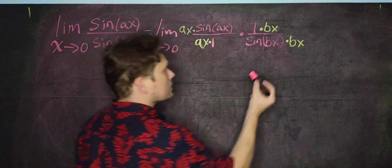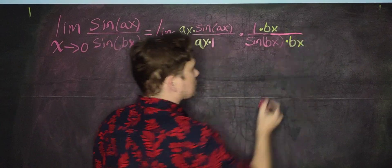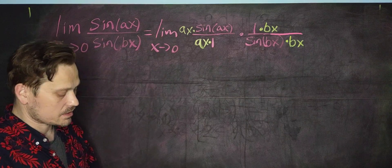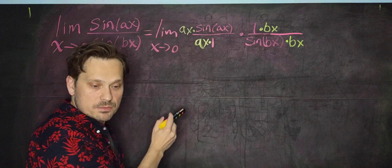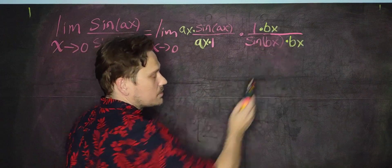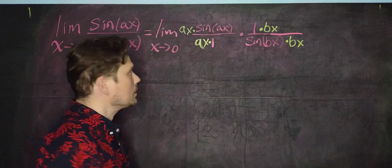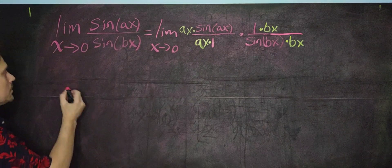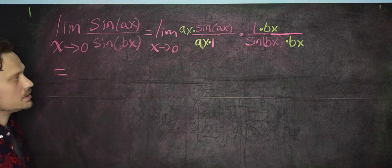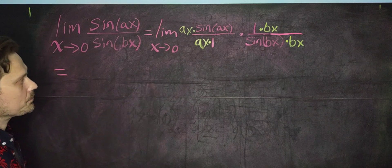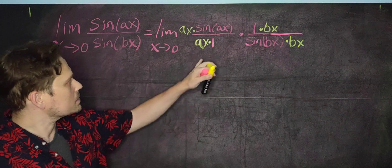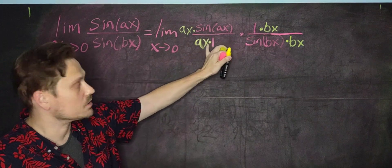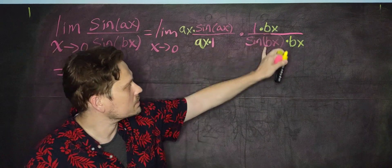Let me extend the fraction line a little bit so it looks clear. This is allowed because ax divided by ax is 1, and bx divided by bx is also equal to 1. Now let's look at what we can do next. I want to isolate sine ax over ax, and I want to isolate bx over sine bx, and then take the remaining bx and place it somewhere else.